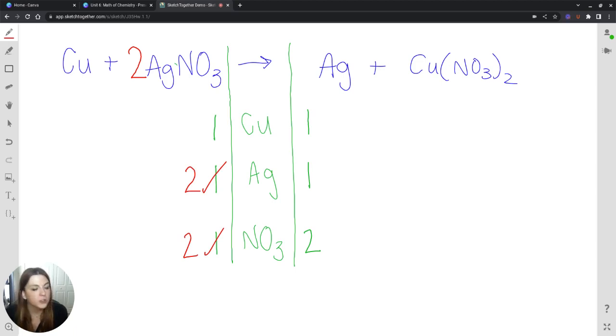What's going to happen next is I am going to put a two out in front of the silver, telling me that I now have two silvers. And that's it. That's how you would balance that chemical equation.